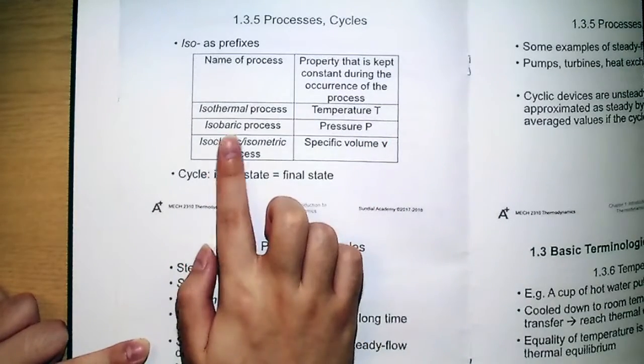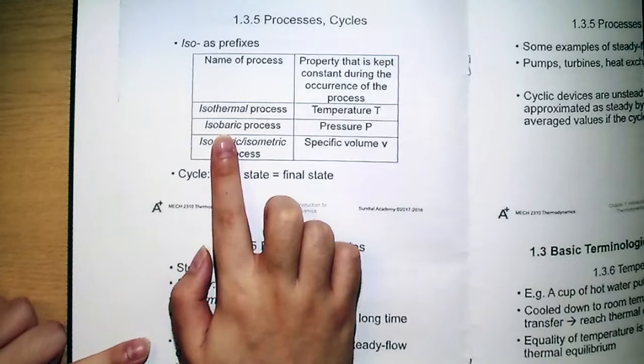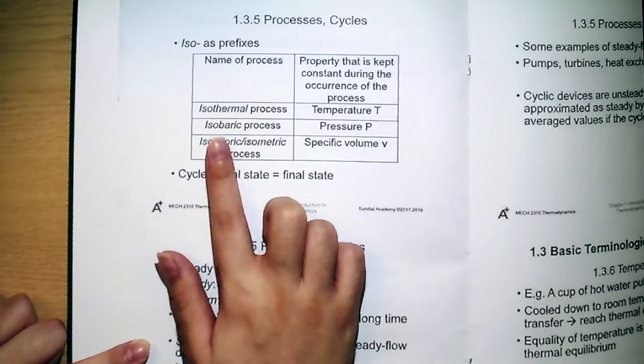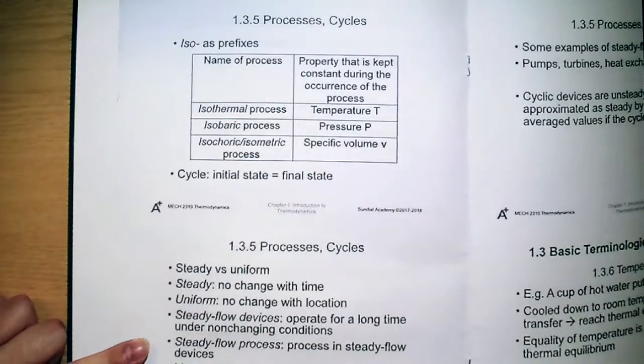Isobaric process refers to constant pressure. Why? Because bar is actually the unit, one of the units of pressure. And iso means no change, so that means constant pressure.